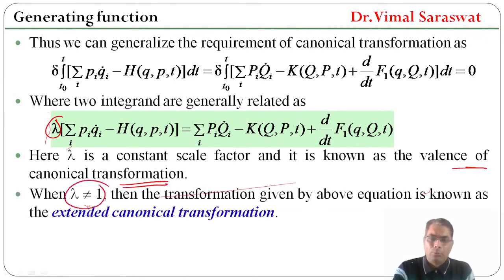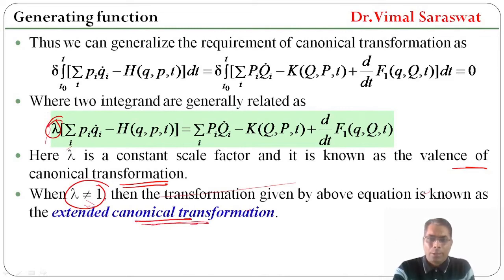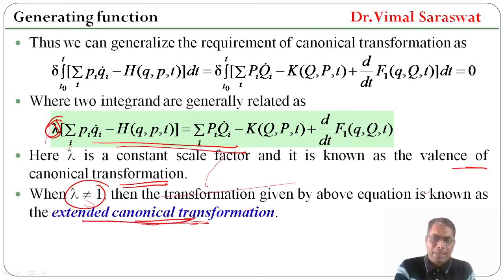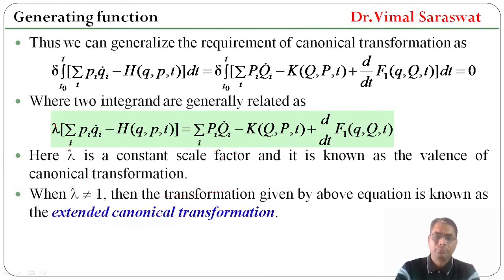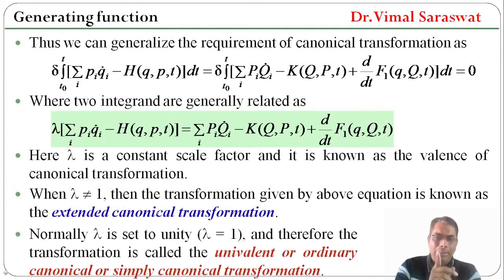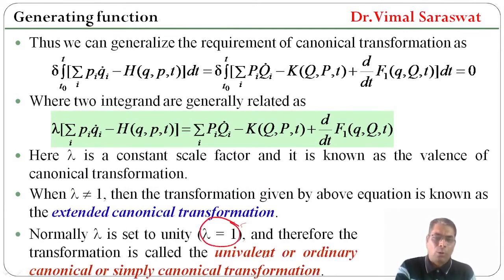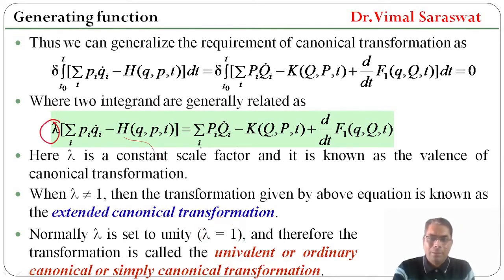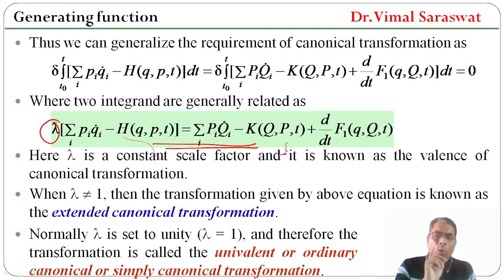When lambda is not equal to 1, the transformation given by the above relation is known as extended canonical transformation. Normally, lambda is set to unity (lambda equals 1), and therefore the transformation is called the univalent, or ordinary canonical, or simply canonical transformation.